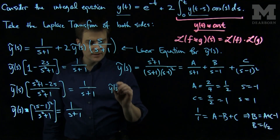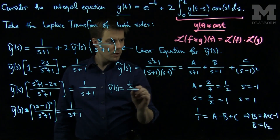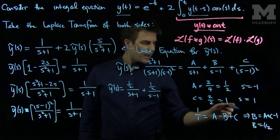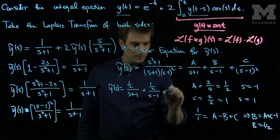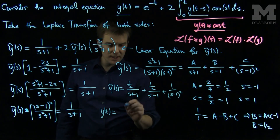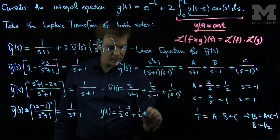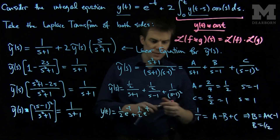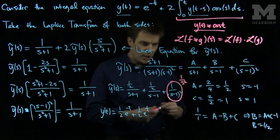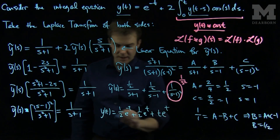So our Laplace transform y-tilde of s is 1 half over s plus 1, plus 1 half over s minus 1, plus 1 over s minus 1 squared. Taking the inverse Laplace transform, y of t equals 1 half e to the negative t, plus 1 half e to the t. Since 1 over s minus 1 squared is 1 over s squared shifted, and the inverse transform of 1 over s squared is t, the last term gives t times e to the t. We arrive at our solution.